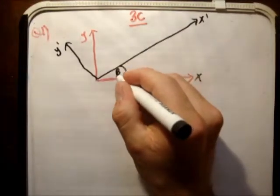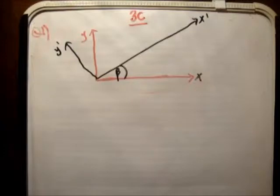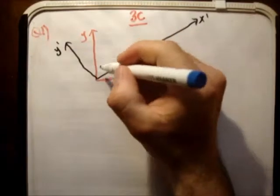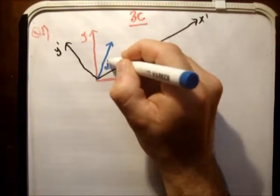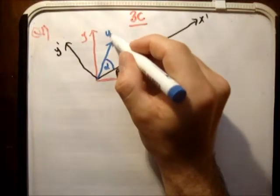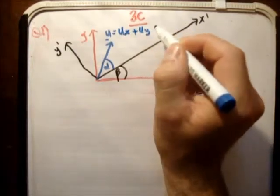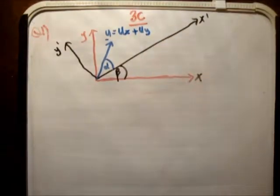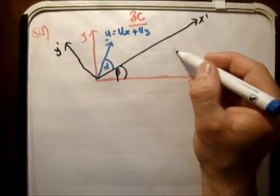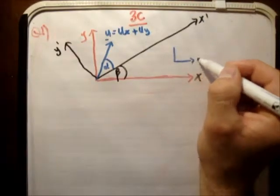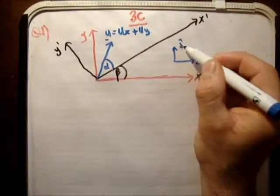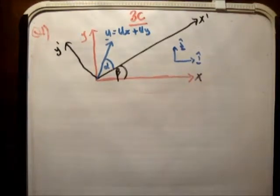The next thing we need to do is draw the initial velocity vector. So the initial velocity vector is with respect to the hill — it's at an angle alpha to the hill. U is equal to u sub x plus u sub y. In terms of unit vectors, we're going to try to resolve everything in the x prime, y prime plane.